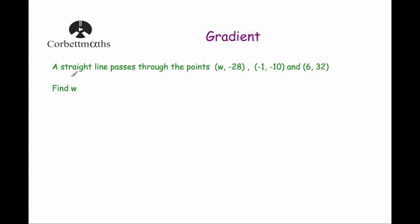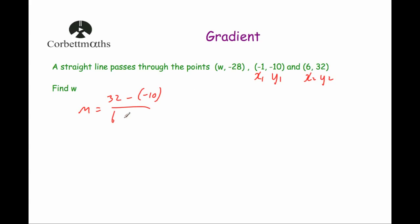Our last question says: a straight line passes through the points (w, −28), (−1, −10), and (6, 32). Find w. Since it's a straight line through three points, I'll first use the points (−1, −10) and (6, 32) to find the gradient. Labelling them x1, y1 and x2, y2, we get m equals 32 minus (−10) over 6 minus (−1), which is 42 over 7, giving a gradient of 6.